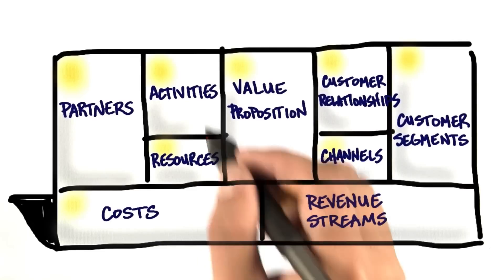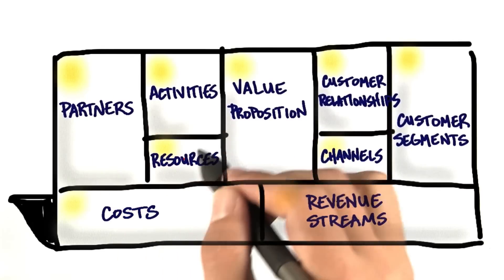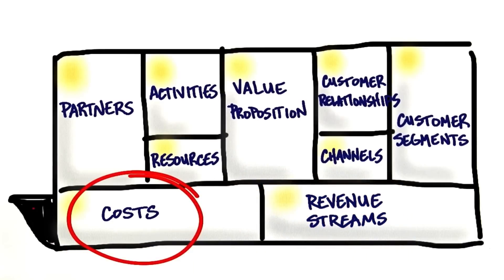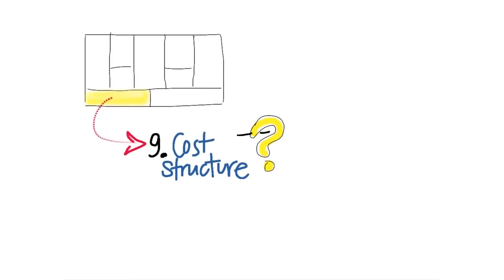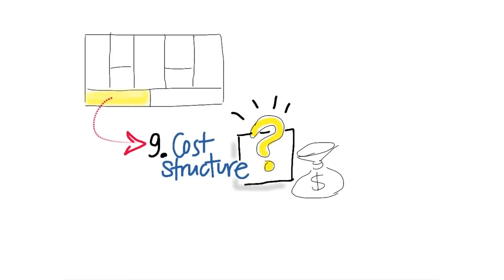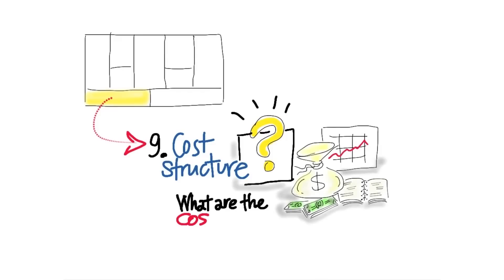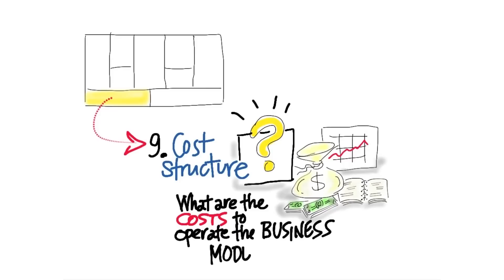And then finally, all this adds up on the left-hand side, over here, to cost. What are the costs and expenses to operate the business model? One of the interesting things about cost is it's not just the obvious ones, like people or buildings or materials. What you're really going to be asking is: what are the entire costs to operate our business model?